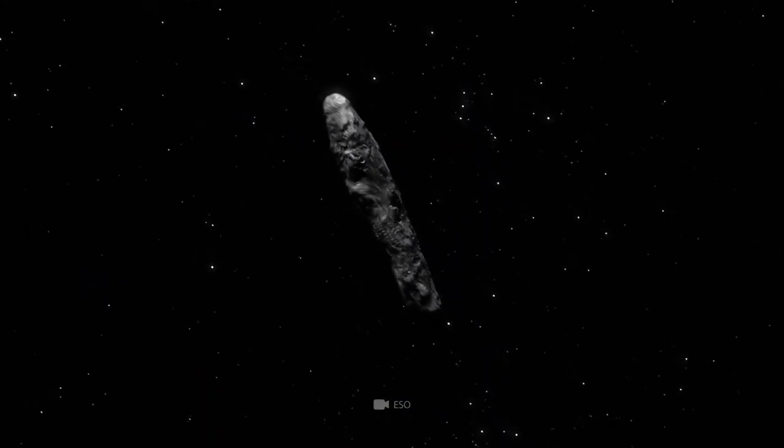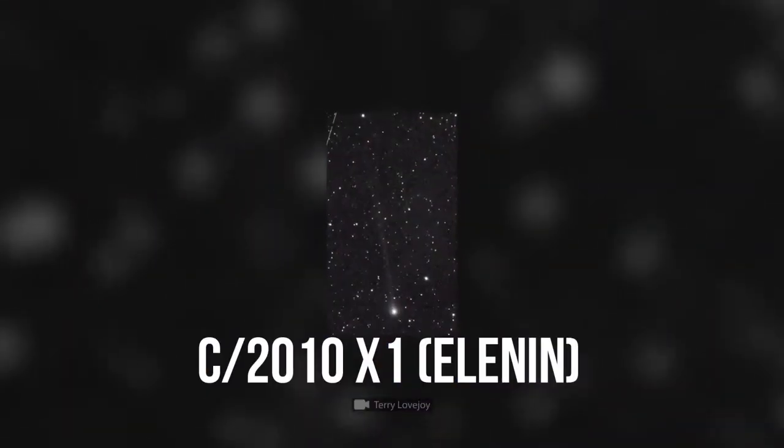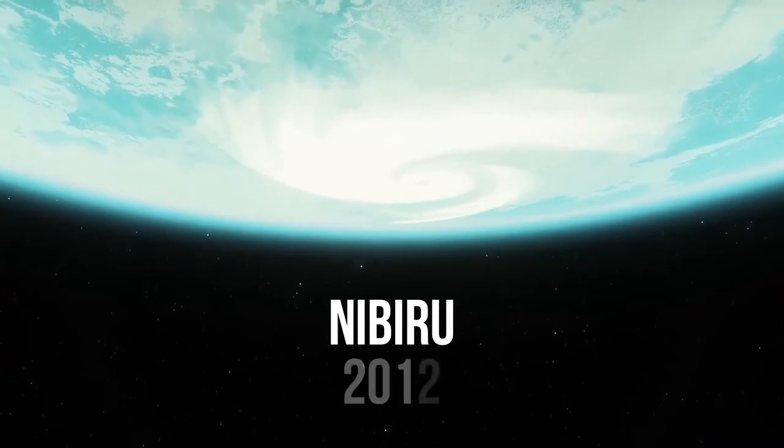Scientists have repeatedly made mistakes with predictions for the end of the world. Starting with the Elenin comet in 2011 to collision with Nibiru in 2012.